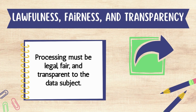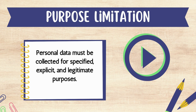Lawfulness, fairness, and transparency means that processing must be legal, fair, and transparent to the data subject. The next principle is purpose limitation, which means that personal data must be collected for specified, explicit, and legitimate purposes.